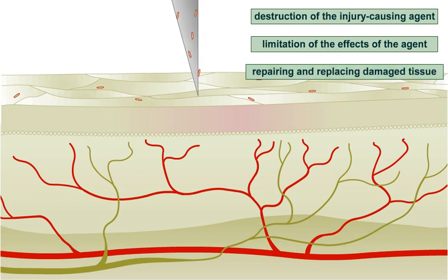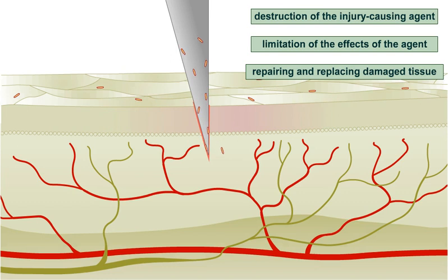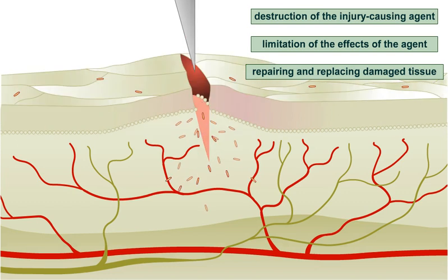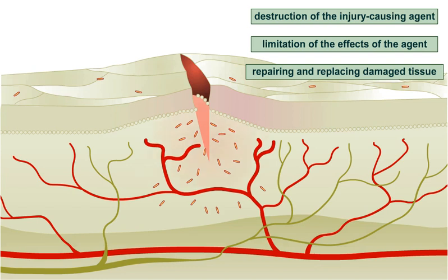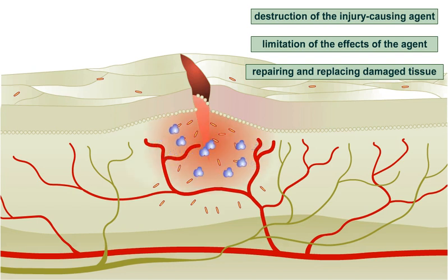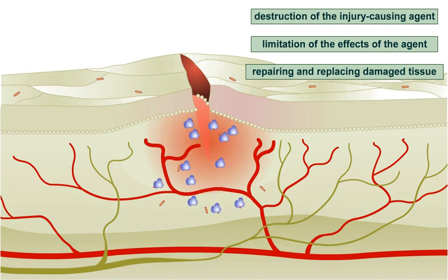Inflammation leads to repair and replacement of damaged tissue when possible. Different tissues have different capacities to regenerate themselves. While the outer layer of skin is able to completely repair a small cut, leaving no scar, cardiac muscle tissue does not regenerate at all.